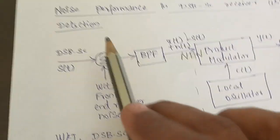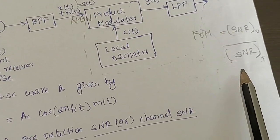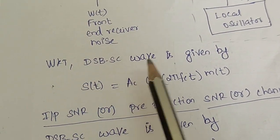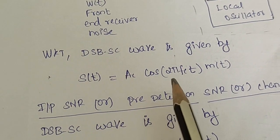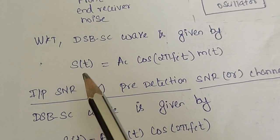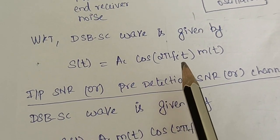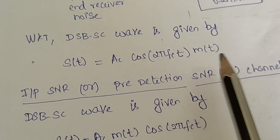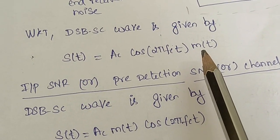We have to start with the equation of DSBSC and find the signal to noise ratio at the input and then at the output. A DSBSC wave can be obtained by a simple product of message and carrier. So S of T is expressed mathematically as the carrier component Ac·cos(2πFcT) multiplied by the message M of T, where M of T represents the message signal.